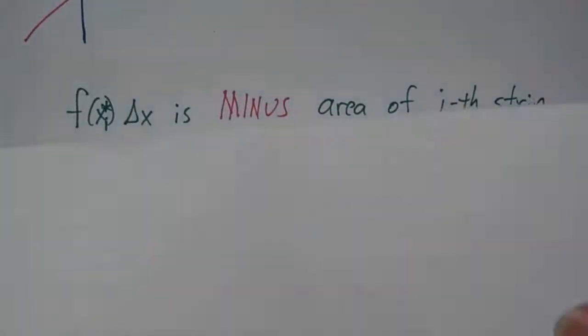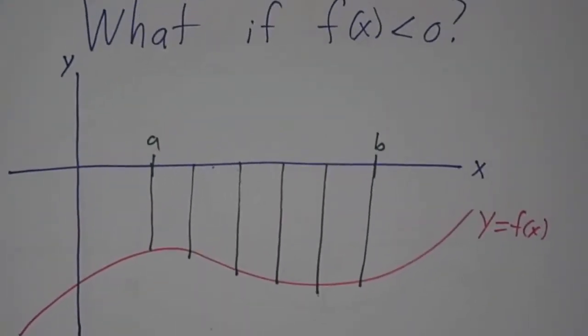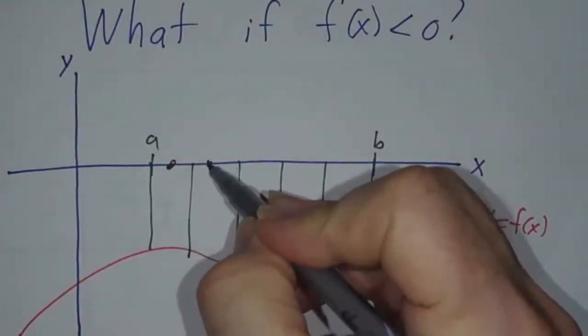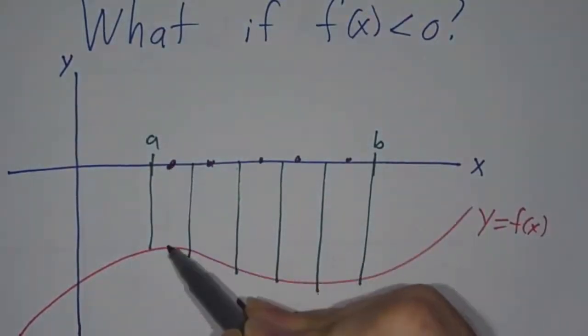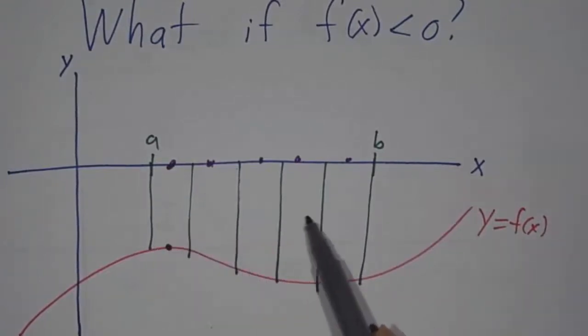Of course, that is only if the function is positive. What if you have a function that's negative? If you have a function that's negative, then you pick your points, and for each point, f of x is negative. So f of x times delta x is going to be negative, and you're adding up a bunch of negative things. Well, that's going to give you something negative. That's not an area.